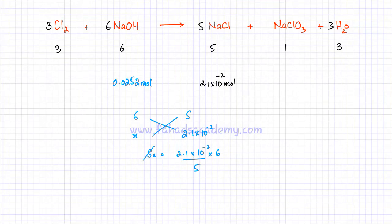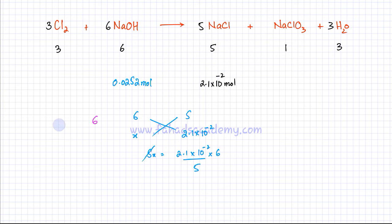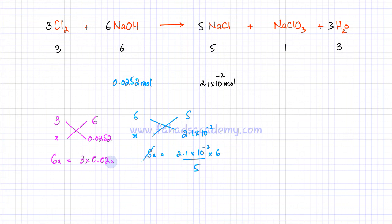Now I want to figure out how many molecules of chlorine are needed to produce this amount of NaCl. I know that six NaOH react with three Cl₂ molecules, so I'll use that ratio. If I have 0.0252 moles of NaOH, then x moles of chlorine are required. Cross-multiplying: 6x = 3 × 0.0252. So x = 3 × 0.0252 ÷ 6 = 0.0126 moles of Cl₂.